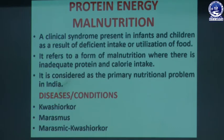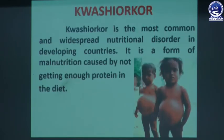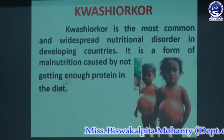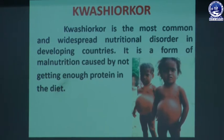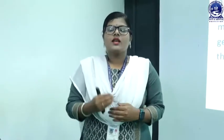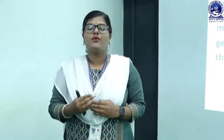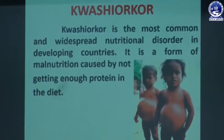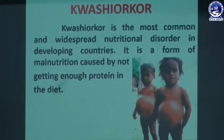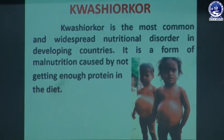Kwashiorkor is the most common and widespread nutritional disorder in developing countries. It is a form of malnutrition caused by not getting enough protein in the diet. When children lack sufficient protein nutrients they will face Kwashiorkor. Symptoms of Kwashiorkor include acute illness or infections, prolonged starvation, measles, trauma, sepsis, weight loss, and high mortality.